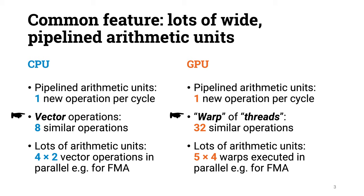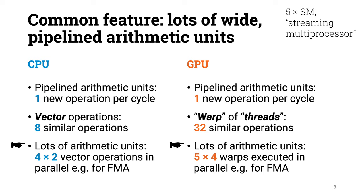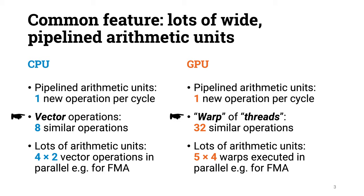On the GPU side, the programmer's perspective is somewhat different, as we don't use vector operations. Instead, we program it as if we had 32 threads running in parallel — more about that soon. So we have got pipelined arithmetic units that do many similar operations in parallel, and moreover there are lots of such units. For single precision floating-point arithmetic, our CPUs have got 4 cores and 2 arithmetic units per core, so 8 arithmetic units in total. Our GPUs have an even larger number: there are 5 streaming multiprocessors, each with 4 arithmetic units, giving 20 arithmetic units in total.